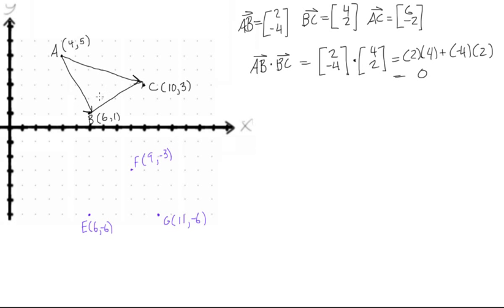And there you have it. We found that these two vectors AB and BC are orthogonal to each other, and so that would give us a right angle here in fact.